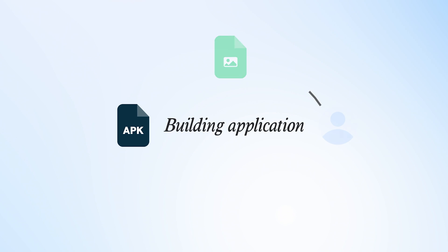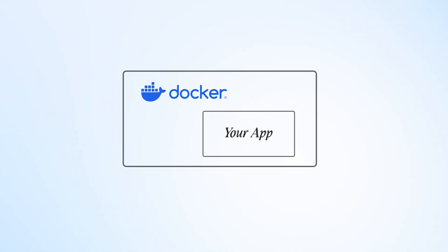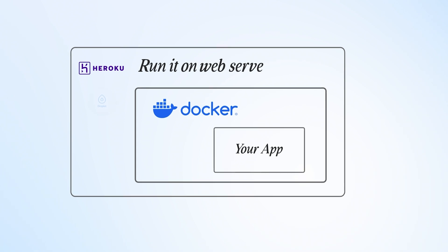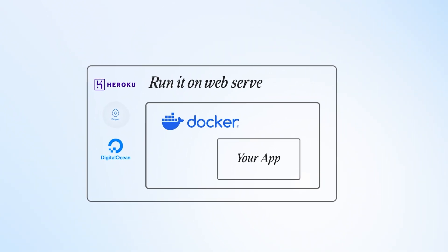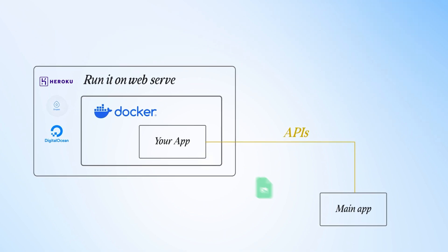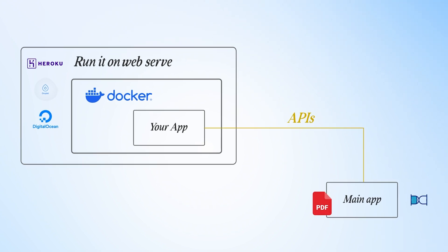Let's take another example. Say you're building an application where you take an image from a user and convert it into a PDF. One way to build this is to dockerize your application and run it on a web server — like DigitalOcean or Heroku. You buy a droplet for three or five bucks and run your application inside that Docker container. You can connect your main application to that service via APIs: send the photo, it does the calculation, converts it to PDF, and sends it back so the user can download it. This is just one example, but it demonstrates the power of Docker.